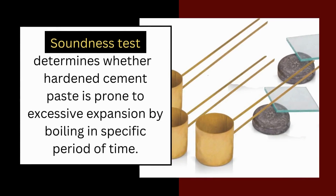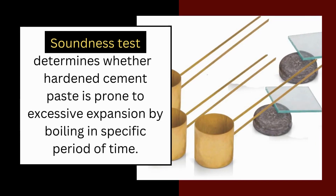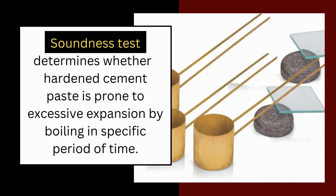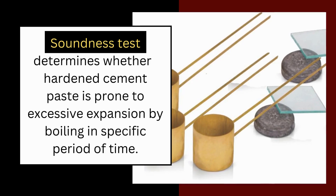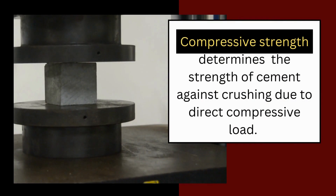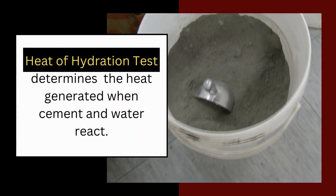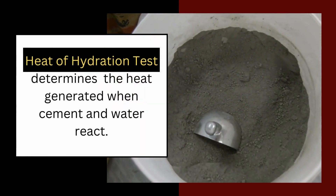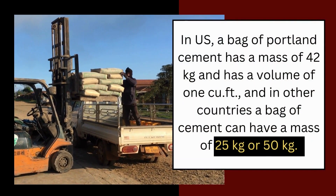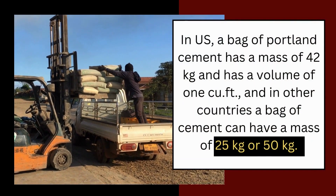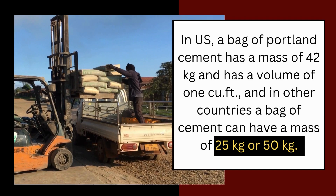Soundness test determines whether hardened cement paste is prone to excessive expansion by boiling in a specific period of time. Compressive strength determines the strength of cement against crushing due to direct compressive load. Heat of hydration test determines the heat generated when cement and water react.